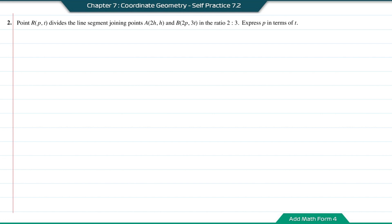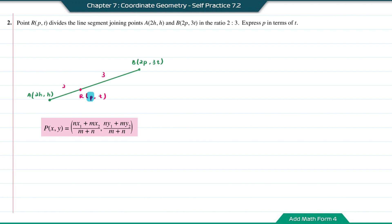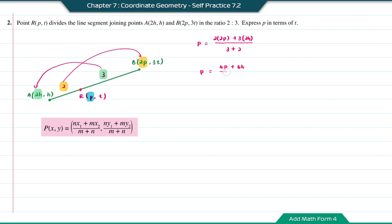Questions number 2. Point R with coordinates (P, T) divides the line segment joining point A with coordinates (2H, H) and point B with coordinates (2P, 3T) in the ratio 2 to 3. Express P in terms of T. Based on the ratios, A to R is 2 and R to B is 3. For the x-coordinate of point R, which is P, it will be 2 times 2P plus 3 times 2H, divided by 3 plus 2, giving 4P plus 6H over 5.